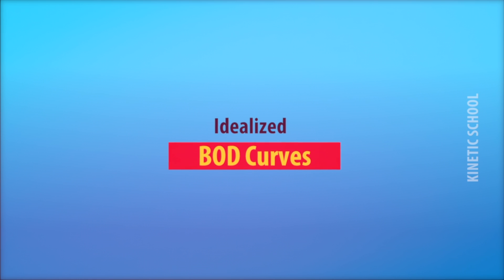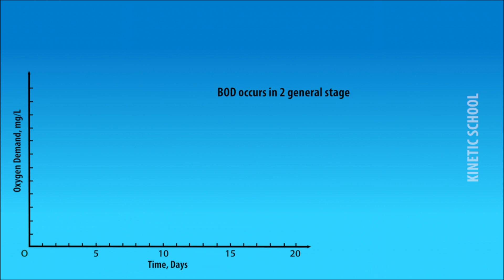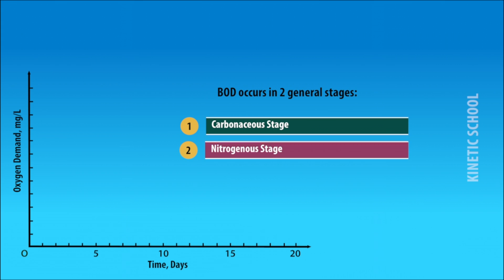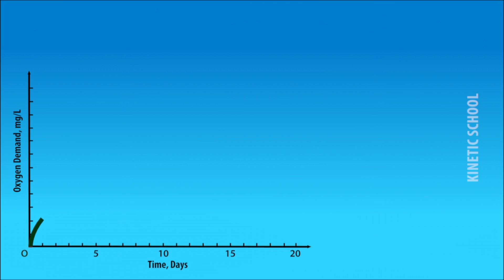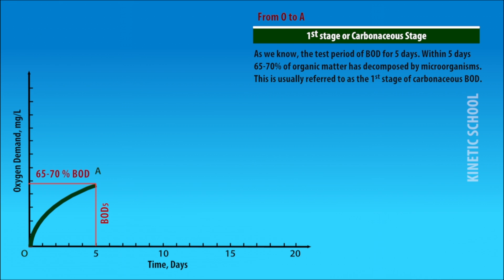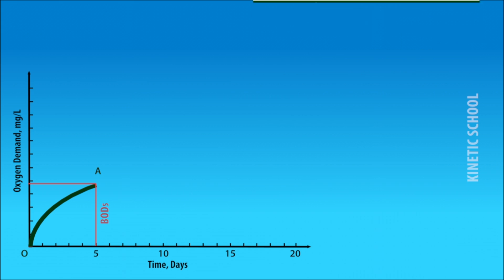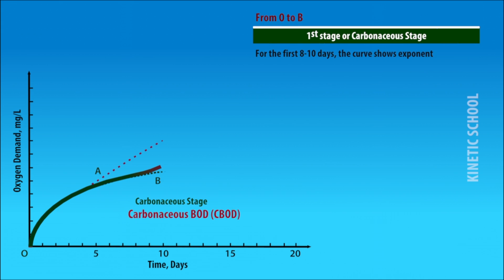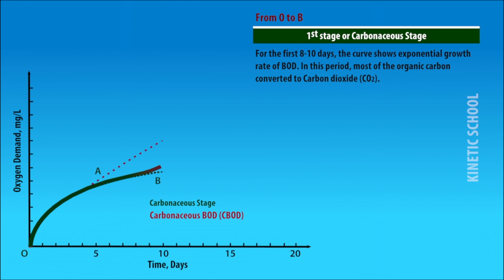The idealized BOD curve shows that biological oxygen demand occurs in two general stages: the carbonaceous stage and the nitrogenous stage. The standard BOD test period is five days, during which 65 to 70 percent of organic matter is decomposed — this is the first stage, called carbonaceous BOD. For the first eight to ten days, the curve shows an exponential growth rate of BOD, during which most organic carbon is converted into carbon dioxide.